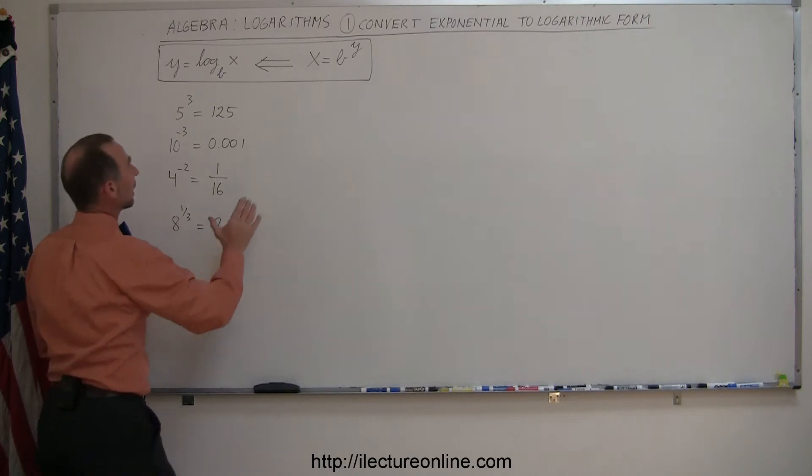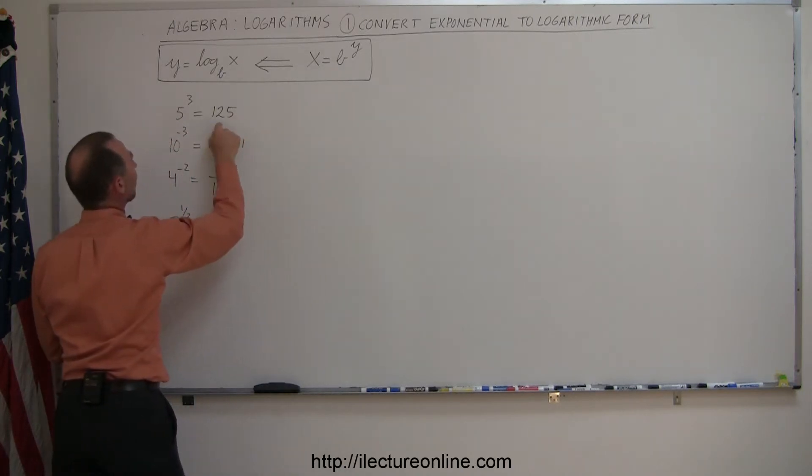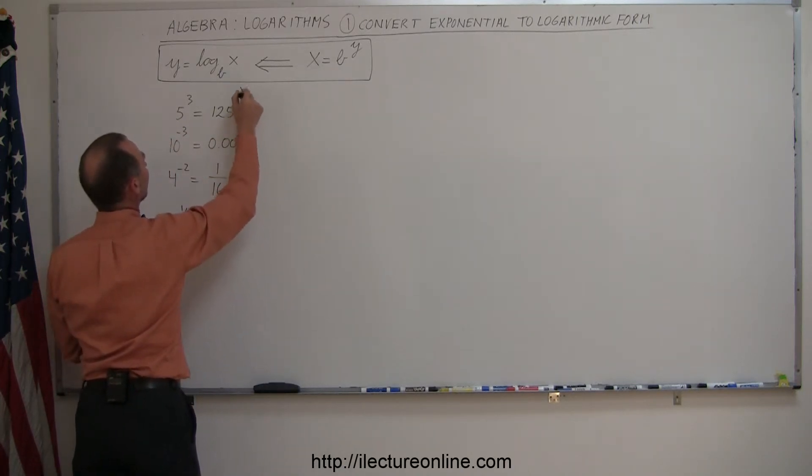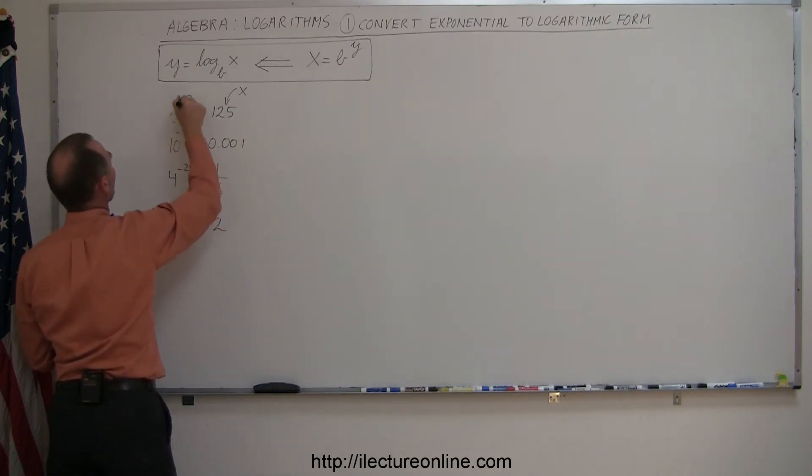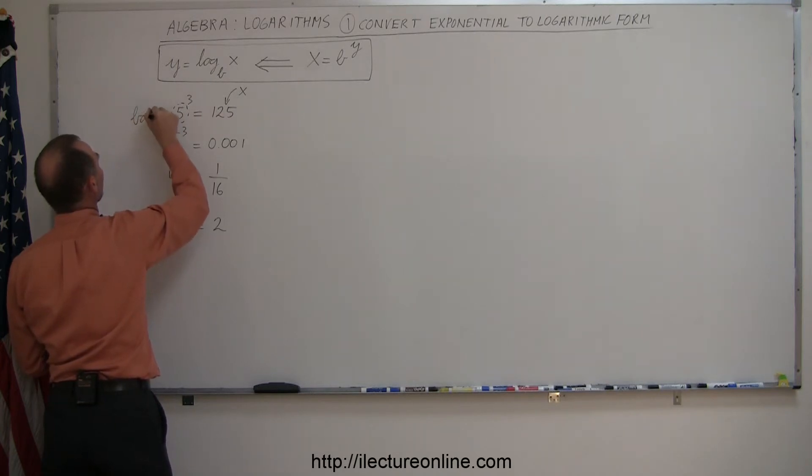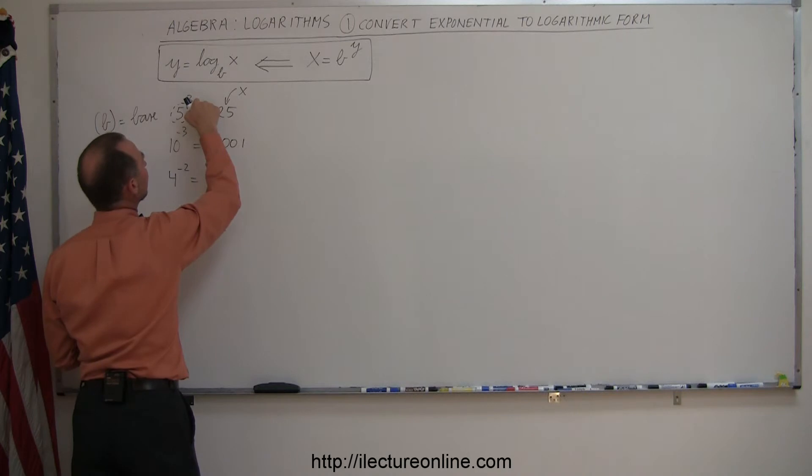Before we get started, take a look at this. We have this here as the X of the equation. The base is right here, so this is considered the base and we use the letter B for that. And then here would be the exponent, so this would be the value for Y.